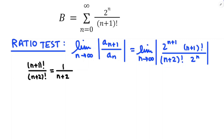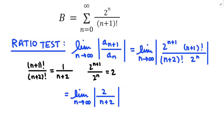And 2 to the n plus 1 over 2 to the n: 2 to the n plus 1 has just got that one extra power of 2, so that simplifies to 2. Combining all of that together gives the limit as n approaches infinity of the absolute value of 2 over n plus 2. The numerator stays constant, the denominator grows and grows, so that limit is going to be 0. And since that limit came back less than 1, I can conclude that B converges absolutely.